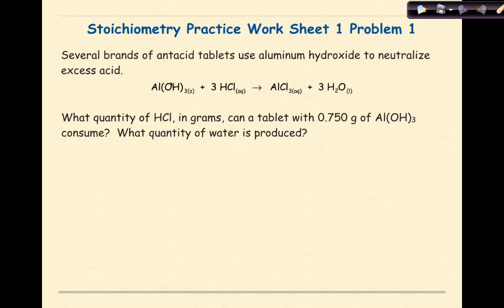So we have a chemical equation here that we just went over. They're asking for a quantity of hydrochloric acid in grams. We are given a tablet with 0.75 grams of aluminum hydroxide. Also, we want to know the quantity of water produced.